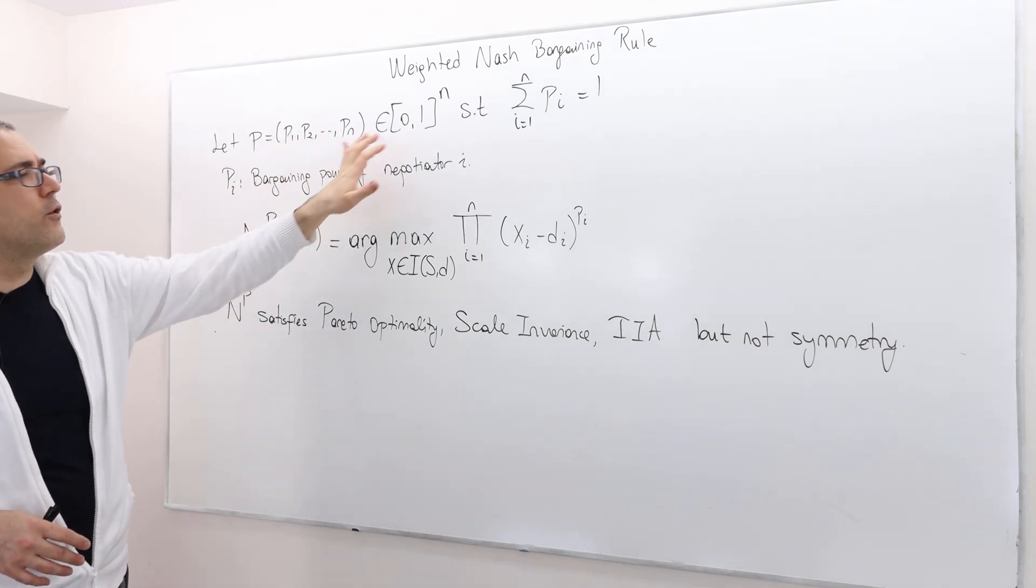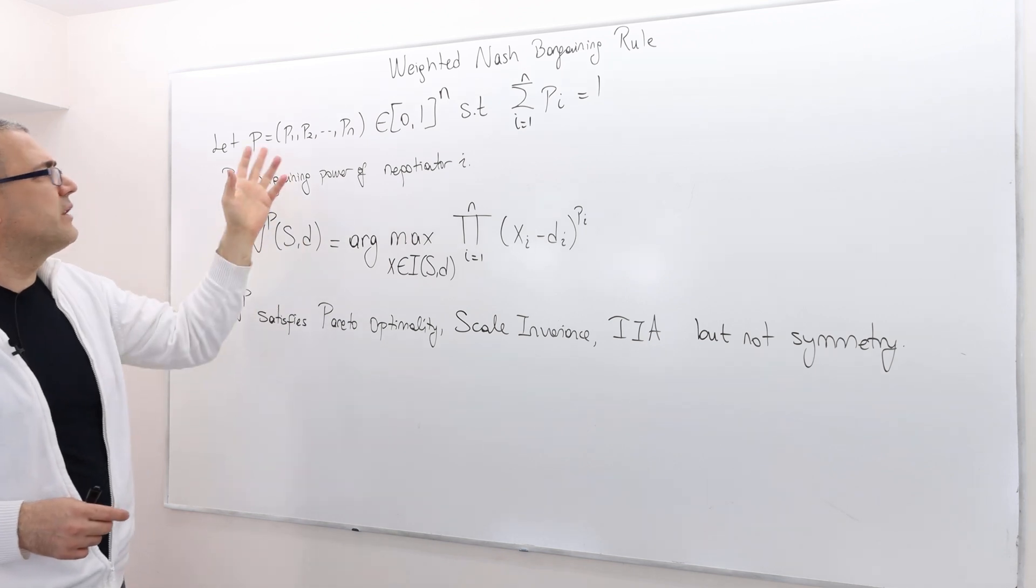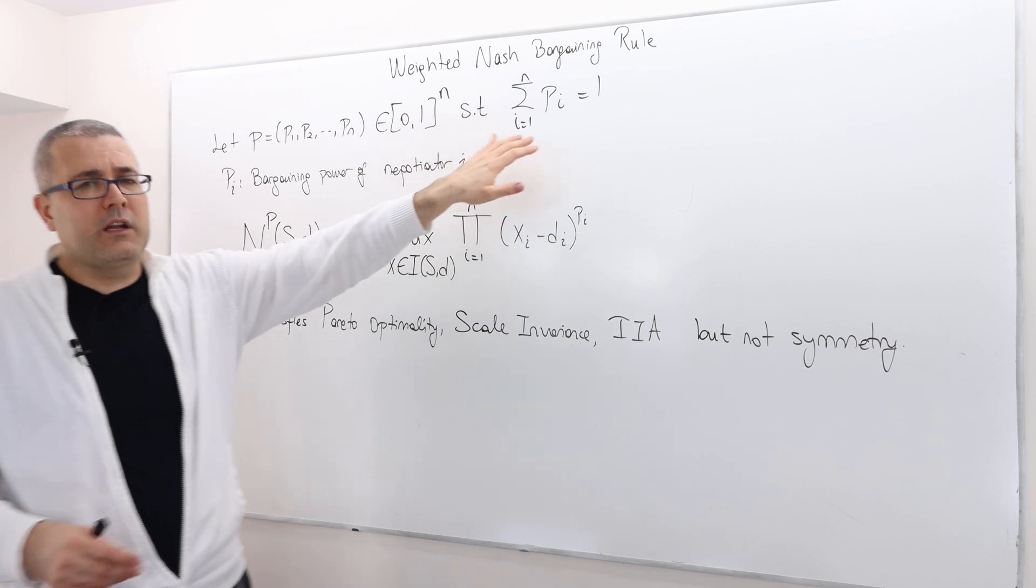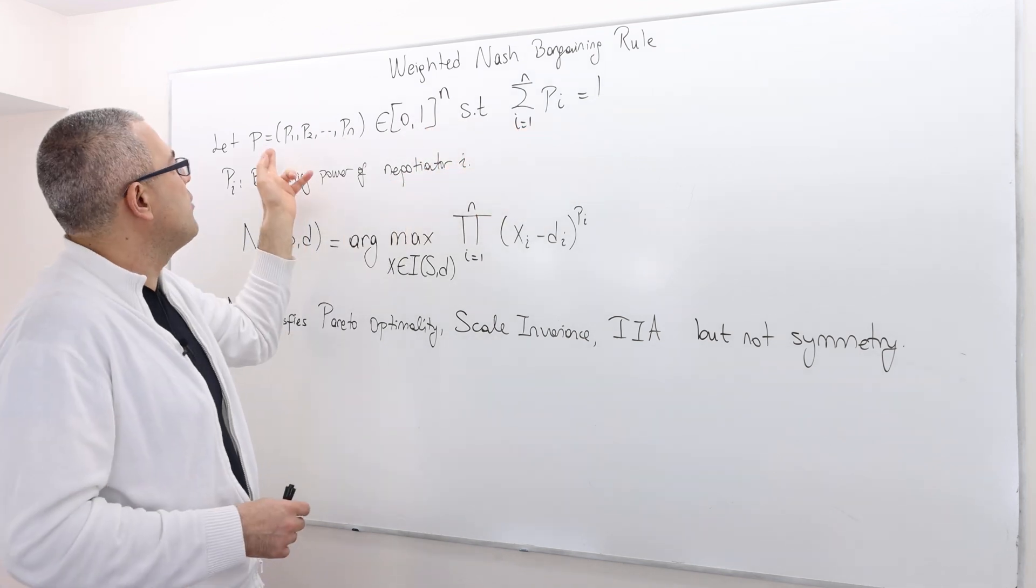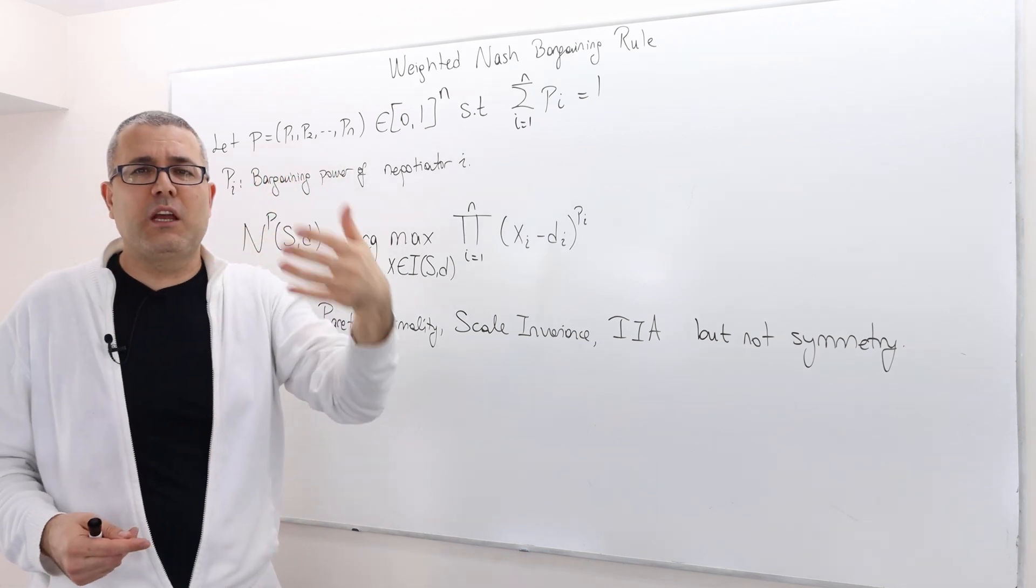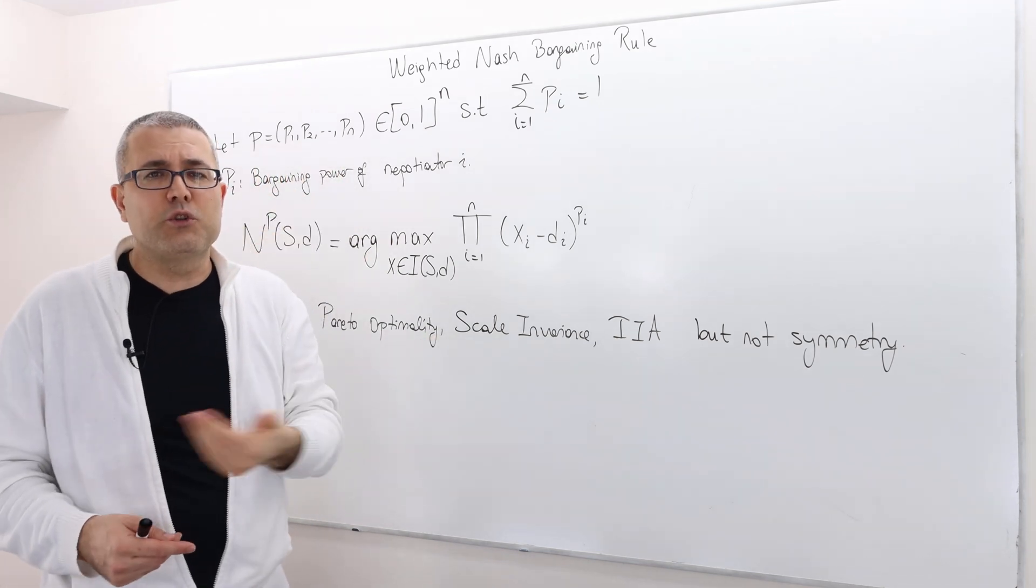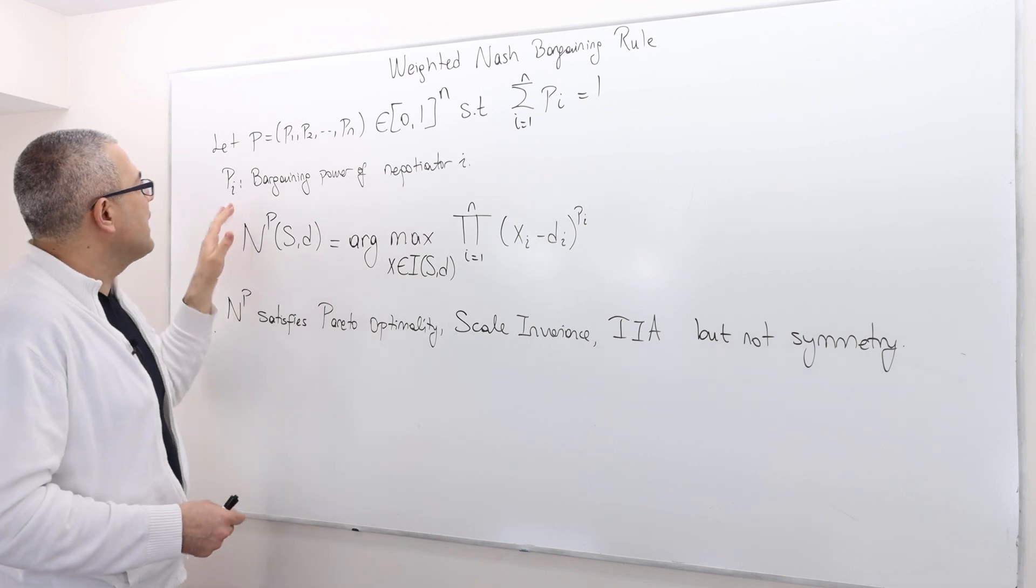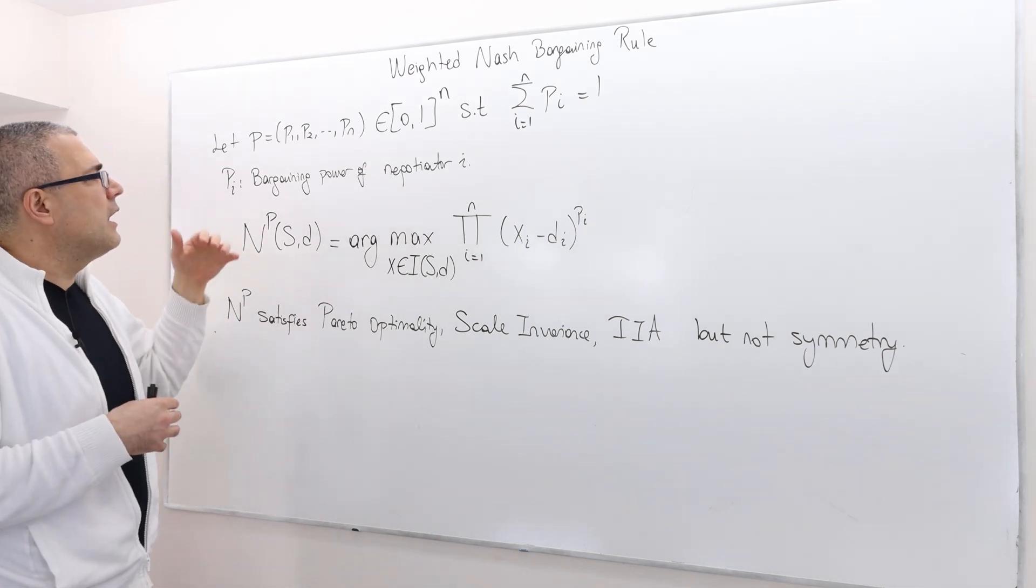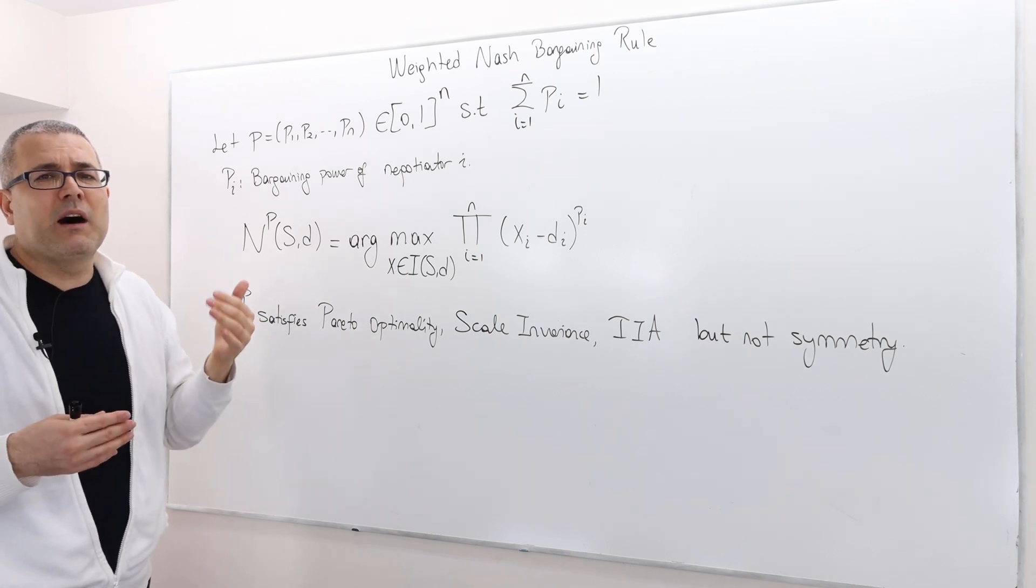Each of those numbers are coming from the 0, 1 interval. So they can't be less than 0. They can't be more than 1. And more importantly, when we add them up, they must add up to 1. So that this P is actually a probability distribution over the players. All right. So each P-I is actually interpreted as the negotiator-I's bargaining power.